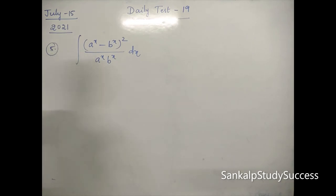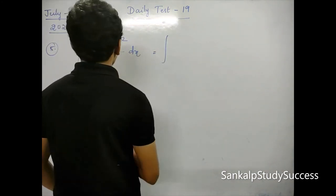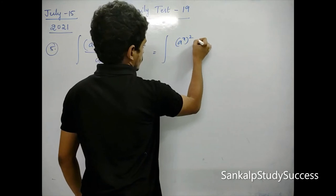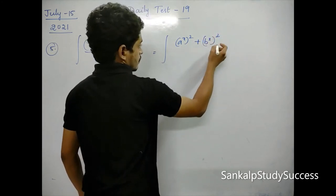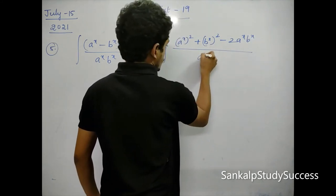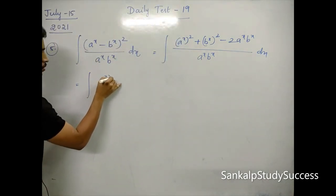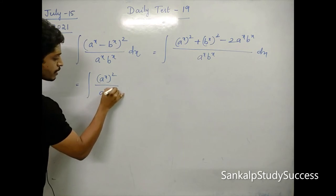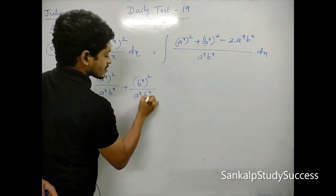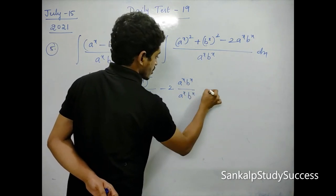Question 5: Integral of (aˣ - bˣ)² divided by (aˣ bˣ) dx. First, expand the numerator using (a - b)² = a² - 2ab + b²: so (aˣ)² - 2·aˣ·bˣ + (bˣ)², all divided by aˣ bˣ, dx.